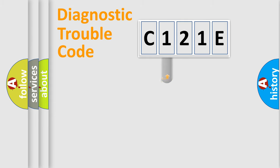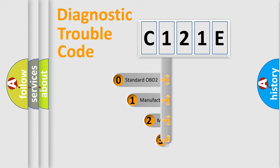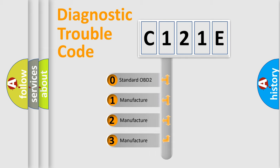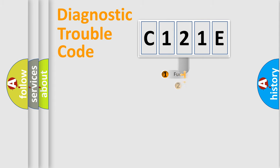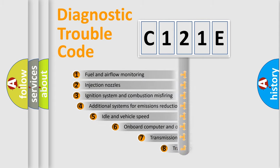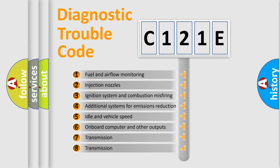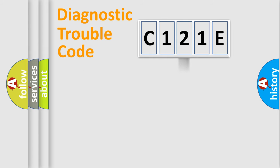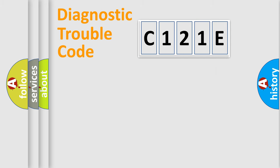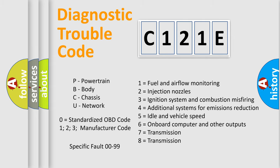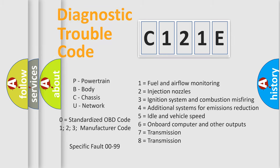This distribution is defined in the first character of the code. If the second character is zero, it is a standardized error. In the case of numbers 1, 2, or 3, it is a more manufacturer-specific expression of the error. The third character specifies a subset of errors. This distribution is valid only for the standardized DTC code. Only the last two characters define the specific fault of the group, and this division is valid only if the second character is zero.